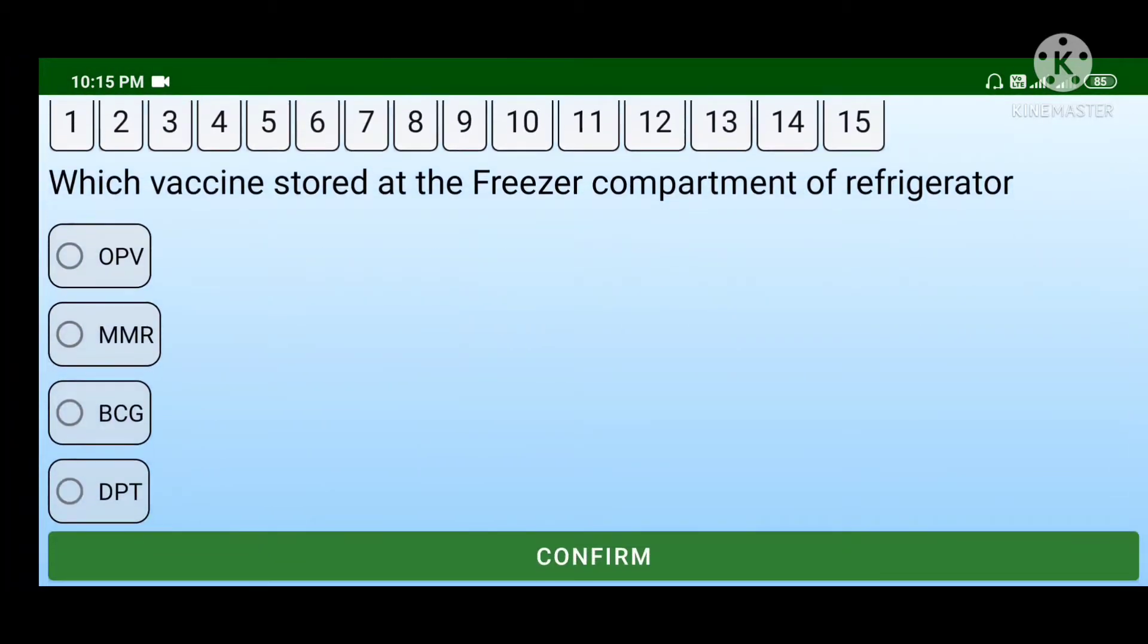First question: Which vaccine is stored at the freezer compartment of a refrigerator? OPV, MMR, BCG, or DPT?